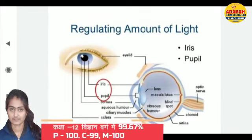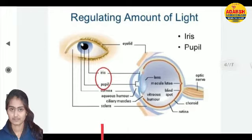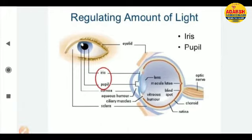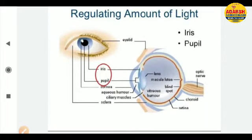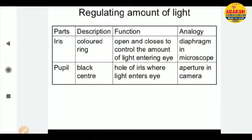Now talking about regulating the amount of light — how iris and pupil function to regulate light. The iris has two types of muscles: contractile muscles and dilatory muscles, which help in making the pupil small and increasing the diameter of the pupil respectively. These muscles are connected to the iris and it regulates the amount of light.